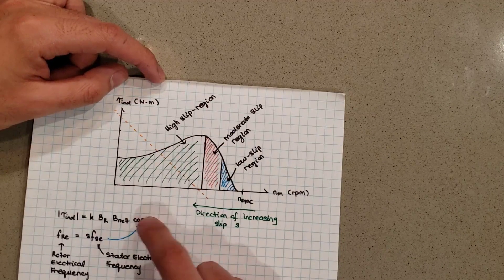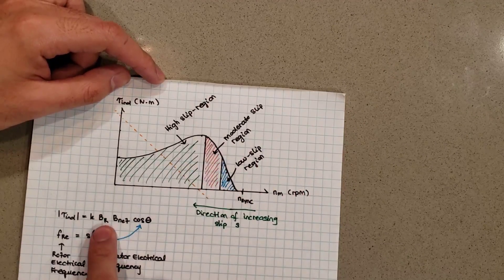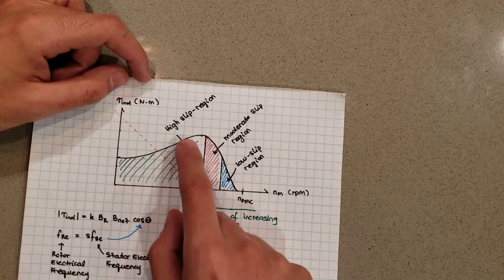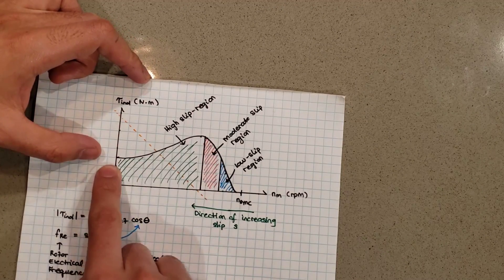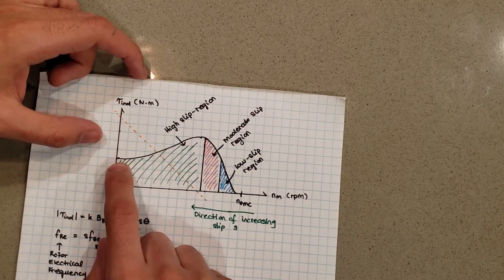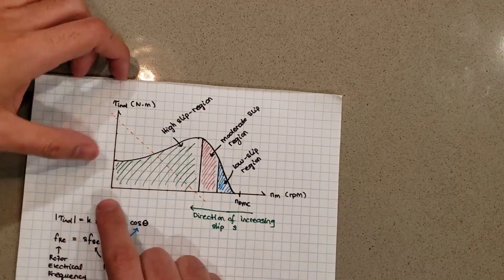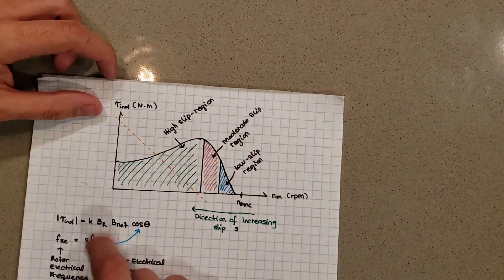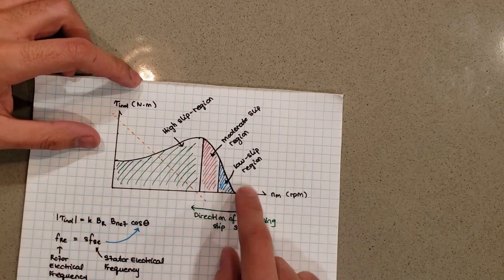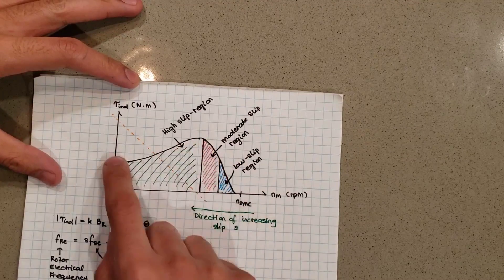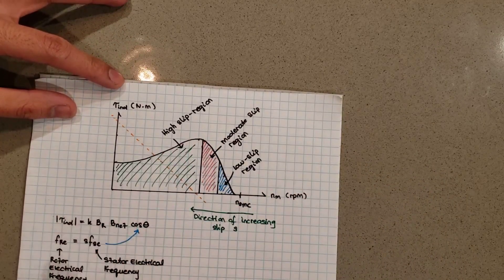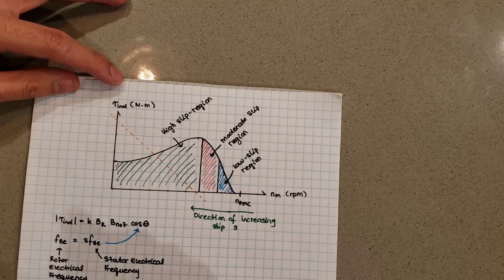In the high slip region, as slip ratio continues to increase, torque goes down because the cosine term is totally dominating the increasing BR term — BR is still increasing, but the power factor is dropping far faster. This continues until we reach the point where S equals one, which means your motor is not moving at all. That point is called the starting torque — if your motor starts from stationary, this is the torque it initially produces. Hopefully this explanation helped clarify why the curve looks the way it does: it's based on the torque equation and the idea of increasing rotor frequency and how it relates to power factor.